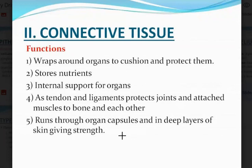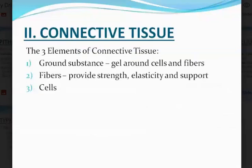So for protection, for nutrients, it supports internal organs, serves as attachments like tendons and ligaments, holds bones together, attaches muscles to bones, and also forms capsules that help give extra strength. There are three elements of connective tissue: the ground substance — a gel around cells and fibers — the fibers that provide strength, elasticity and support, and the cells that produce the matrix of the ground substance and other structures within the connective tissue itself.